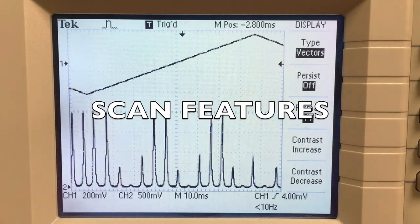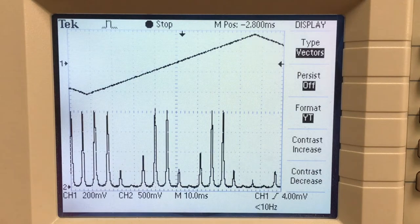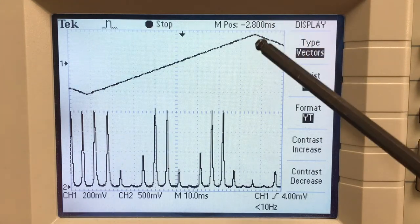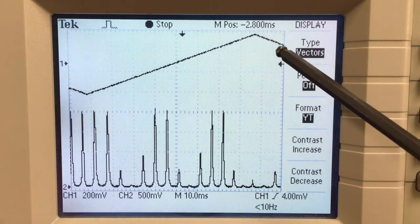So now I'm going to freeze the scan so we can examine some of the features and details. This represents mirror position as it scans across. At this point, the mirror starts reversing directions.